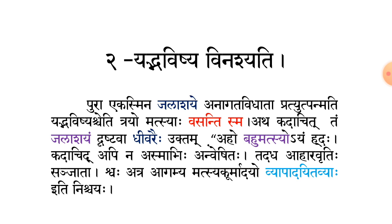Now the translation of this paragraph. I will translate line by line, word by word. Pura means 'earlier.' Ekas means 'one.' Jalashaye means 'in the pond.' Anagatvidhata, Pratyutpannamati, and Yadpavishya — these are the names of three fish. Trayomatsya means 'three fish.' Vasantisma means 'lived.' So, Anagatvidhata, Pratyutpannamati, and Yadpavishya lived in one pond earlier.